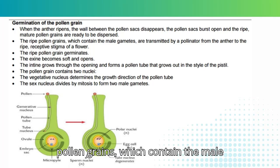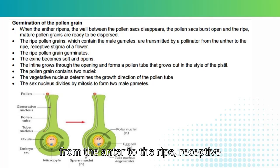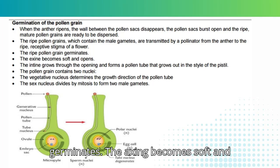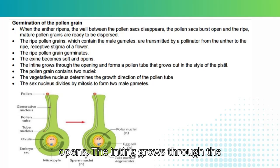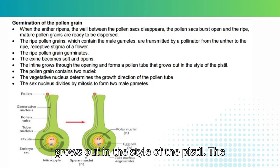The ripe pollen grains, which contain the male gametes, are transmitted by a pollinator from the anther to the ripe, receptive stigma of a flower. The ripe pollen grain germinates. The exine becomes soft and opens, and the intine grows through the opening and forms a pollen tube that grows out into the style of the pistil.